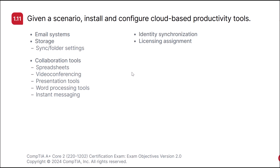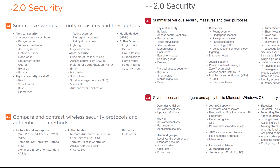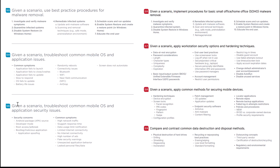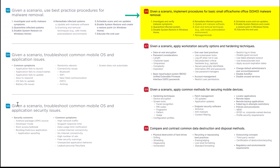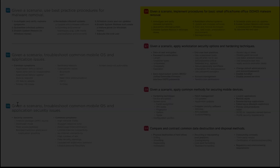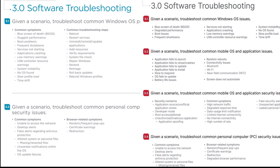Domain 2.0 didn't really change much. The main change is that this domain received a new sub-objective that was originally in 220-1102 sub-objective 3.3. This is now 220-1202 sub-objective 2.6: Given a scenario, implement procedures for basic small office/home office (SOHO) malware removal. Domain 3.0 mainly received some cosmetic changes and lost the sub-objective that we discussed during the Domain 2.0 changes.